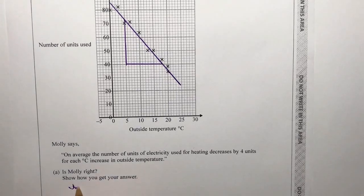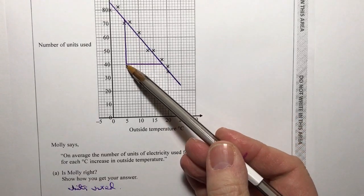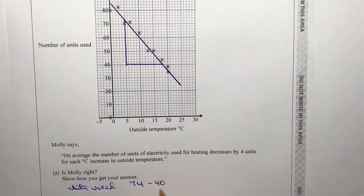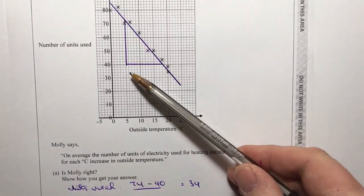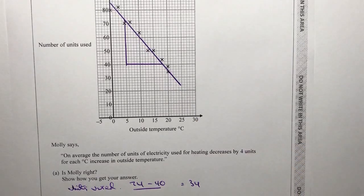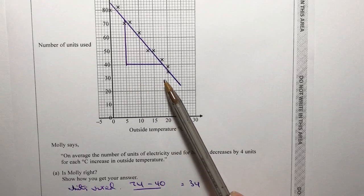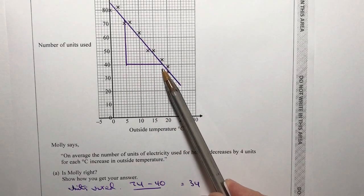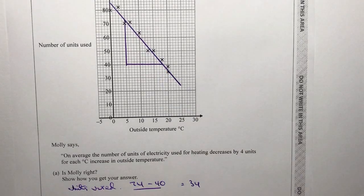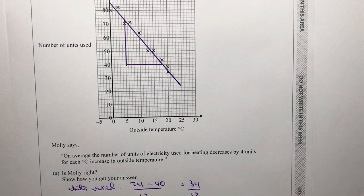So the units that are used is going to be the difference between these two points. In this particular case I've got 74 units take away where I started which was 40 units. So 74 take away 40 — that's going to be 34 units. And then along the bottom, the outside temperature decreases from 5 degrees through to 18 degrees. So the difference between 5 and 18 is 13. So for every 34 units that are used, the temperature decreases by 13.